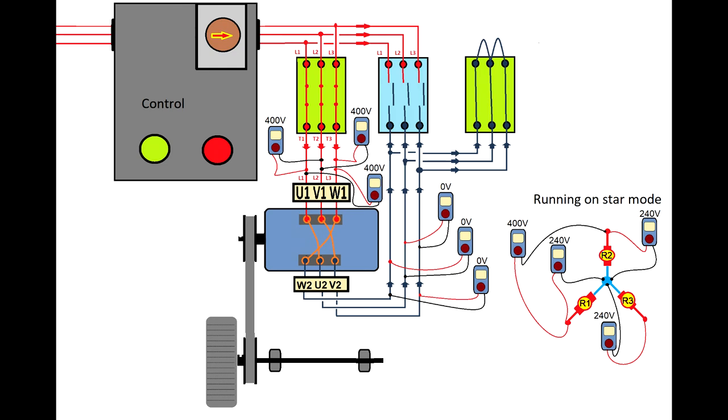Pay attention to this drawing because later on you'll see what happens if between the motor and the third contactor you have a broken circuit. The voltage potential will increase, and this is the only way you can find and troubleshoot a star-delta circuit.